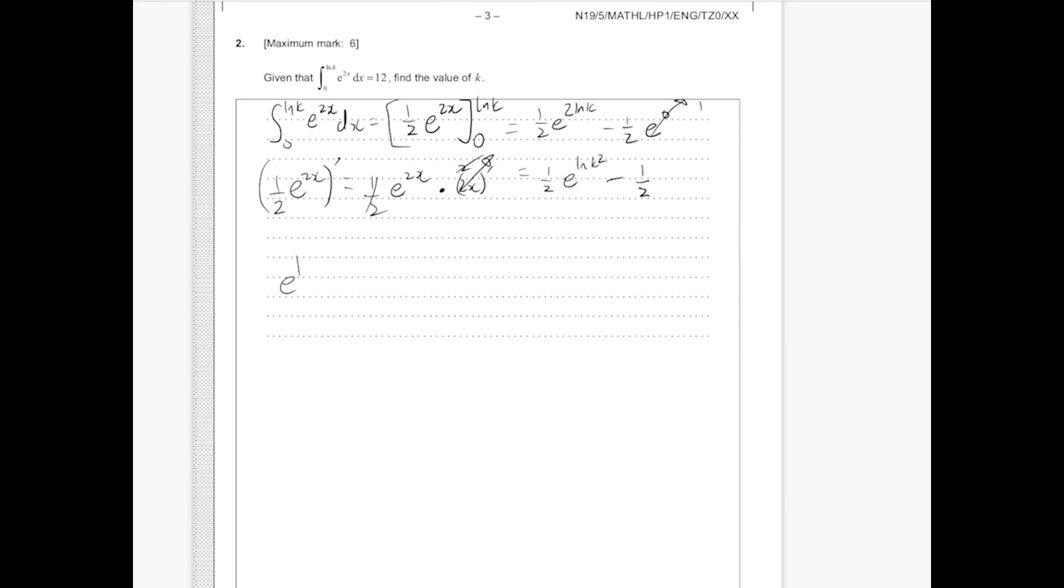Also, we know if we have e to the power of ln a, this is just going to be a. Again, this is a property of exponentials, so you can review it if you're not comfortable using this. This is going to be 1 half k squared minus 1 half.